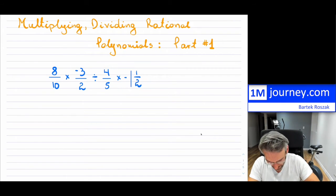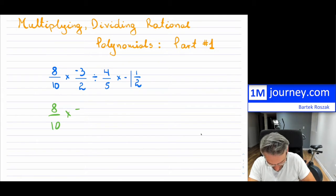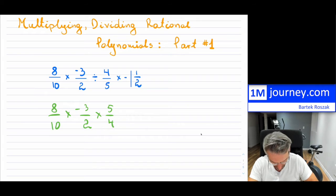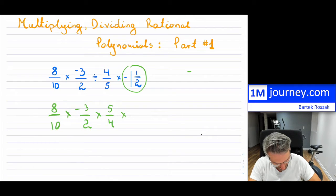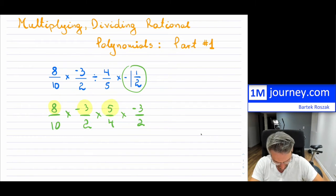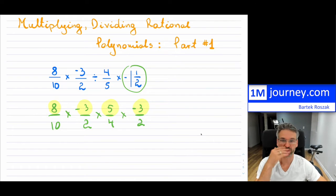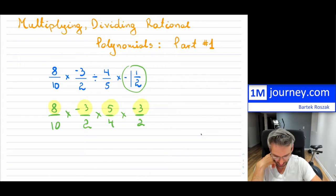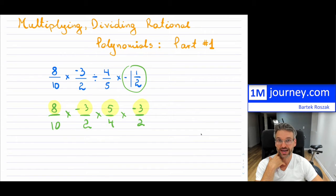As a kind of refresher, we have 8 over 10 multiplied by negative 3 over 2. Division changes to multiplication by the reciprocal, so this is going to be 5 over 4 and then we have another multiplication. Notice we have a whole number, which is simply negative 3 over 2 in improper form. Now, I can go ahead and just multiply all of these, then take all the denominators and multiply them, then find the reduced form. But it is actually worthwhile to see if there are any cancellations of factors in between.